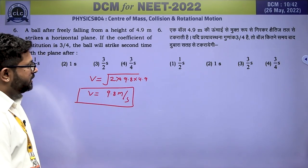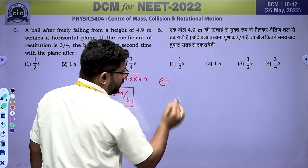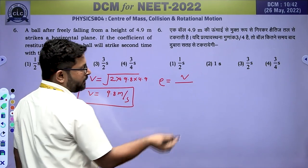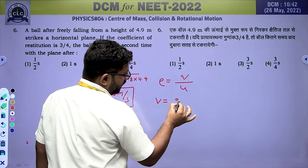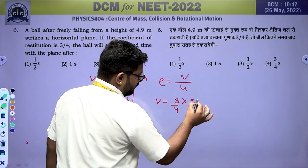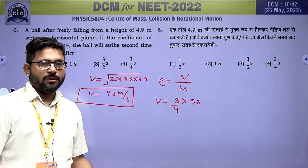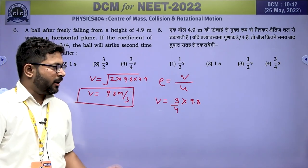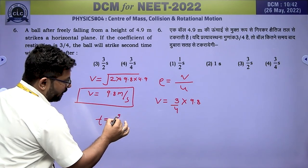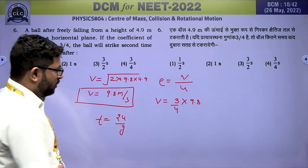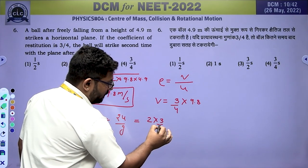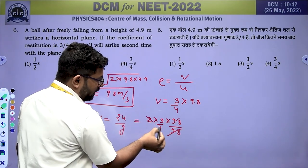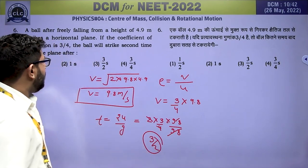Coefficient of restitution E = velocity of separation / velocity of approach. After collision, rebound velocity V = (3/4) × 9.8. Time for ball to return to ground: T = 2V/g = 2 × (3/4) × 9.8 / 9.8 = 3/2 seconds. The correct answer is the 3rd option.